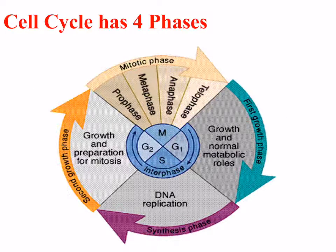This diagram shows the cell cycle phases: G1 is the first growth or gap phase, DNA replication occurs at the S phase, and the second gap phase G2 is right before mitosis.